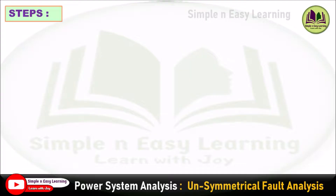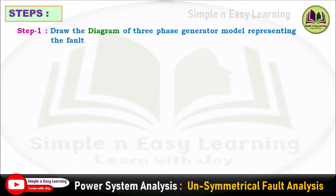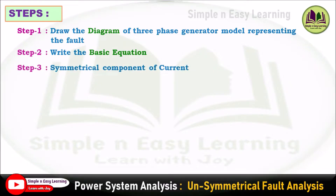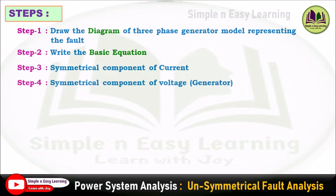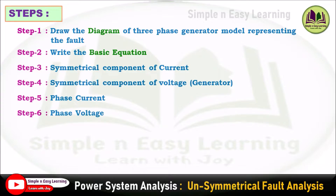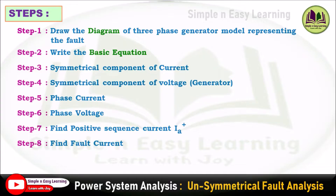Now we will see the steps involved in the analysis of line-to-line fault. Step 1: draw the diagram of the three-phase generator model representing the fault. Step 2: write the basic equation. Step 3: consider the symmetrical component of current. Step 4: consider the symmetrical component of voltage derived from the sequence network of the generator. Step 5: consider phase current. Step 6: consider phase voltage. Step 7: find the positive sequence current Ia+. Step 8: find the fault current If. Step 9: draw the sequence network.